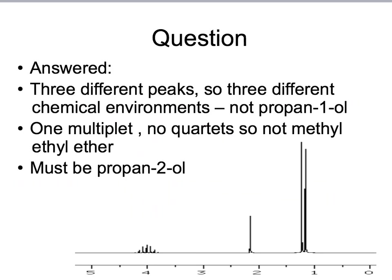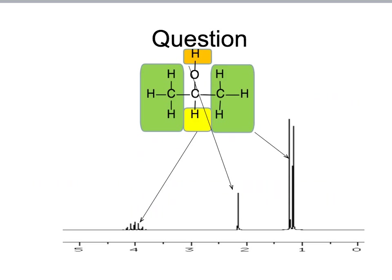So, to answer the question, we can see that there are only three different peaks in the spectrum, which means only three different chemical environments. This means it can't be propan-1-ol, because there were four different chemical environments in that, so we should be seeing four peaks. There is only one multiplet, no quartet, which means it cannot be the methoxethane ether. This leaves only propan-2-ol, and we can assign those peaks to propan-2-ol. So, there's a big doublet at delta equals 1.2. This is the CH3 groups, which we've shown in green. The multiplet at 4.0 is the CH proton, here shown in yellow. So, the singlet at 2.2 must be the OH proton, here shown in orange.